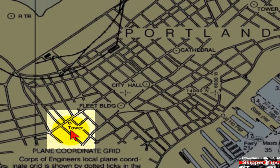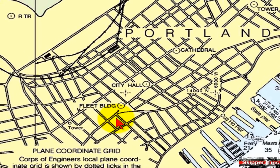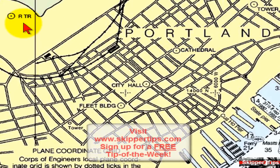You should not use these for safe navigation. Now we can highlight the rest of our prominent objects in the city of Portland: we have city hall, the cathedral, a tower to the northeast, and a radio tower to the northwest.